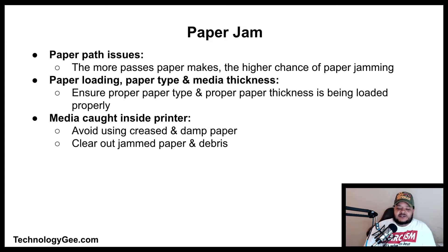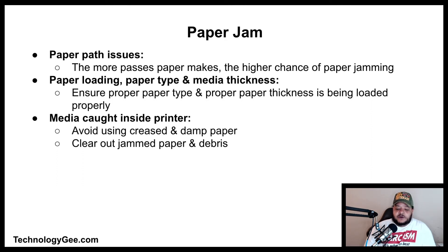For paper jams, consider paper path issues. Paper moving through inkjet, laser, and dot matrix or impact printers typically follows a complex path passing by various rollers and push tractors — the more passes, the higher the chance of jamming. If the printer offers a straight-through path via a rear paper tray, use it to reduce the print path.